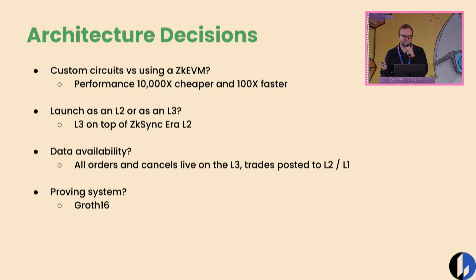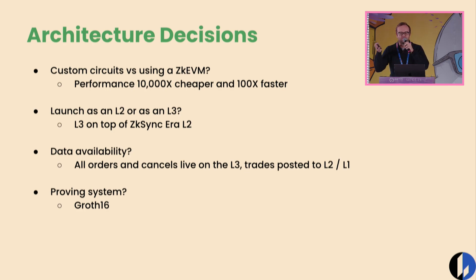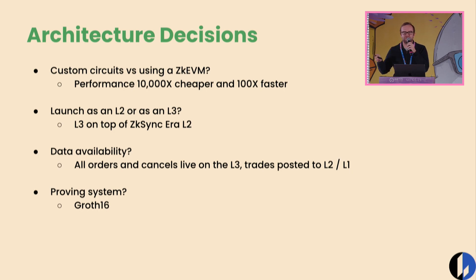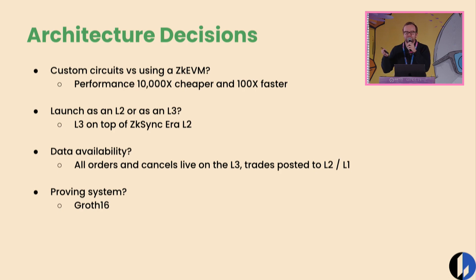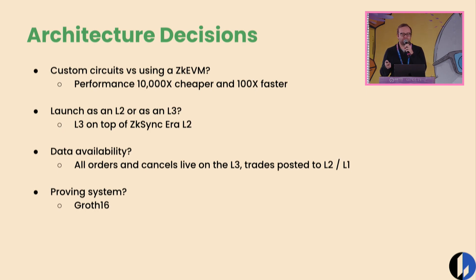Another big decision is around data availability. Going back to the point that in a sufficient market of high-frequency trading, most orders are not filled — most orders are cancelled and replaced. The question is: what happens to all that data? Certainly, the actual trades need to get posted on the base layer. But we made the decision that as long as the proofs that orders were matched correctly are published, the actual individual orders and cancels can just live on the L3. They don't have to be published in the rollup, and this saves a lot of cost as well.